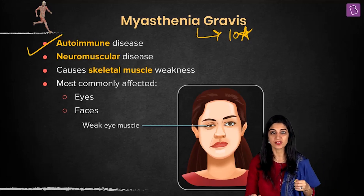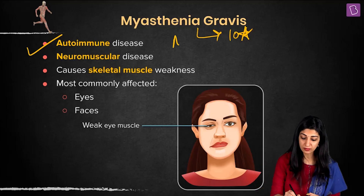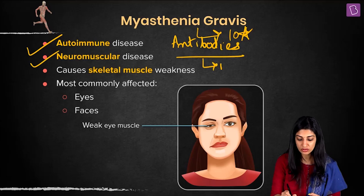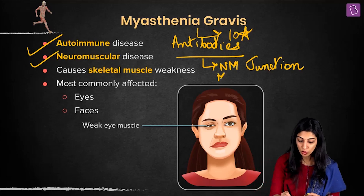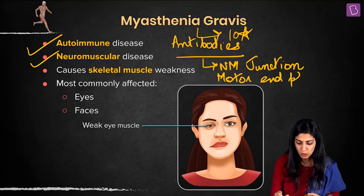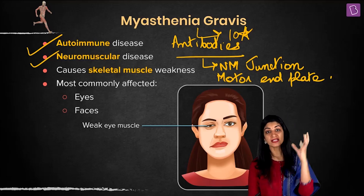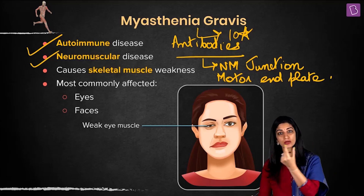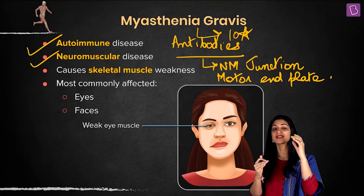The causative agent for myasthenia gravis is the immune system of our own body — antibodies attack the neuromuscular junction, the NM junction, which you studied in your previous session. At the motor end plate, for muscle contraction to happen, acetylcholine is released. The receptors on the sarcolemma receive acetylcholine, and then the wave of contraction starts.